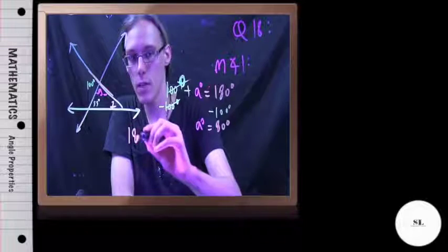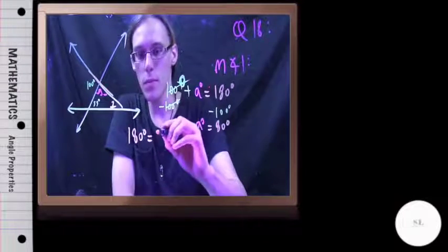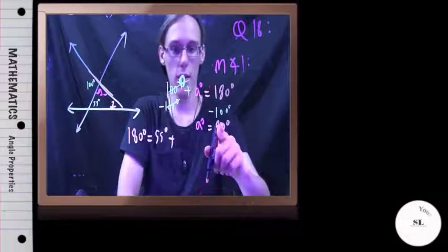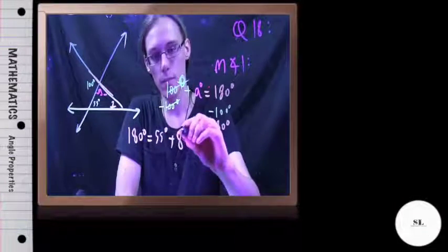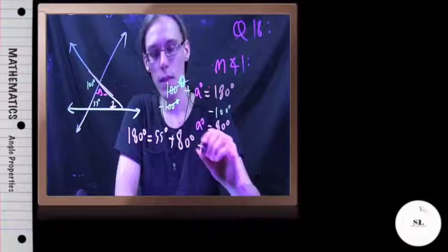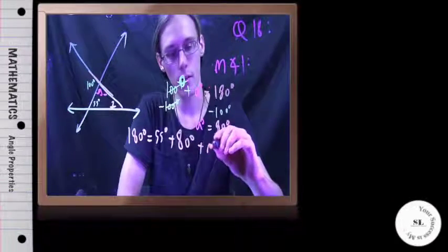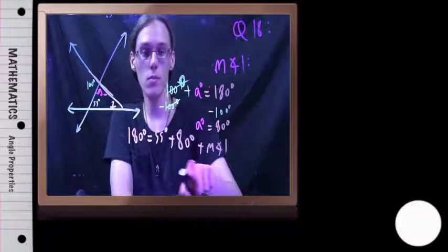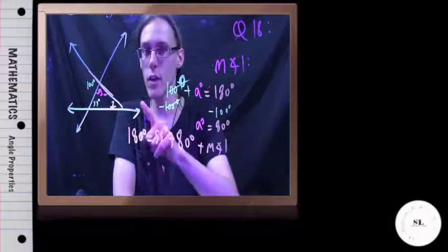We can say 180 degrees has got to be 55 degrees plus this angle, which we found, 80 degrees, plus angle 1 over here. I want to know what this measurement is. So I'll subtract the 80 and the 55 from both sides.